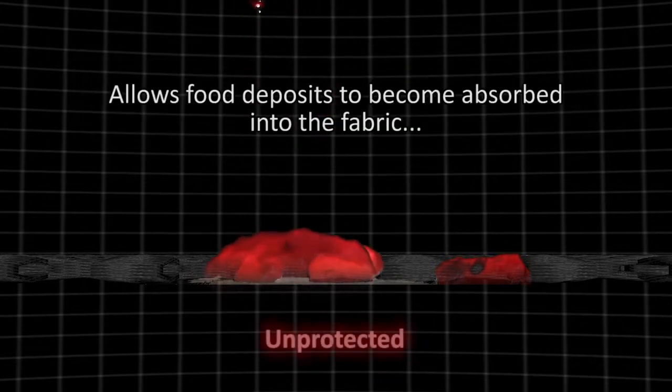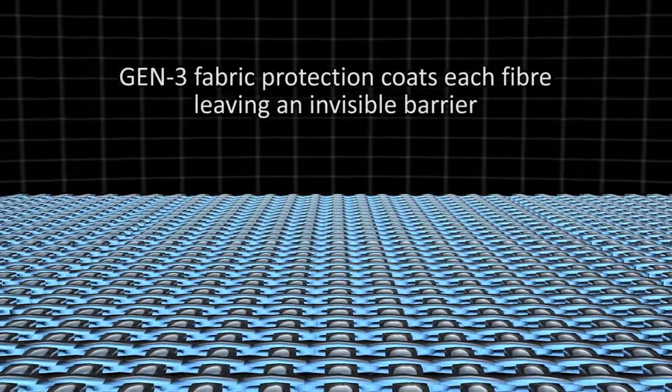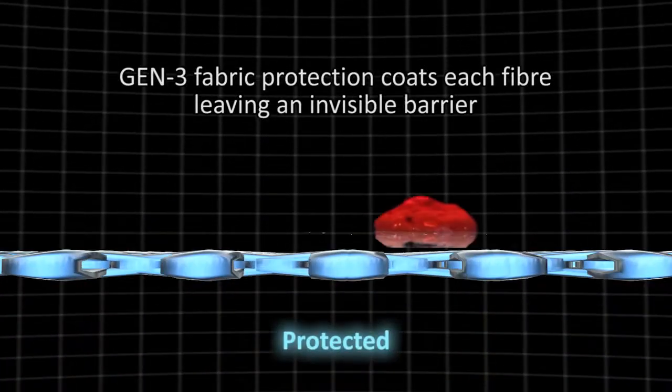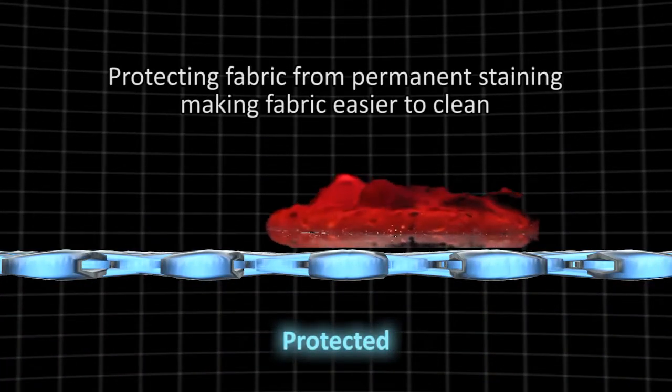The interior fabrics of your car are also protected. A closer look reveals the fabric weave which is unprotected - this allows food deposits to become absorbed into the fabric, which can cause staining. Gen 3 fabric protection coats each fiber of the fabric, leaving an invisible barrier protecting fabric from permanent staining and making fabric easier to clean.